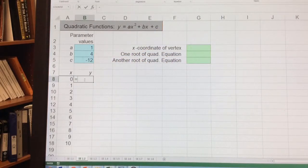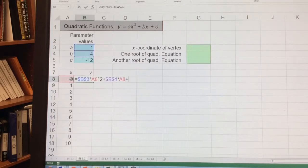So y is equal to ax squared. So we're going to choose this a and we want to anchor that by hitting F4, times x, times x raised to the second power, plus b. And we want to anchor that by hitting F4, times x, plus c.